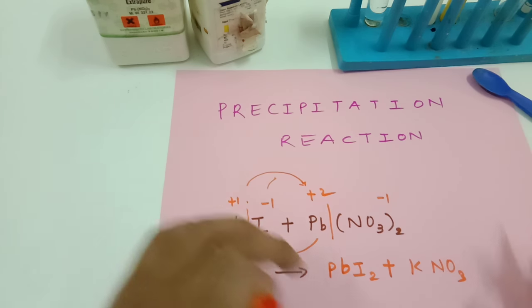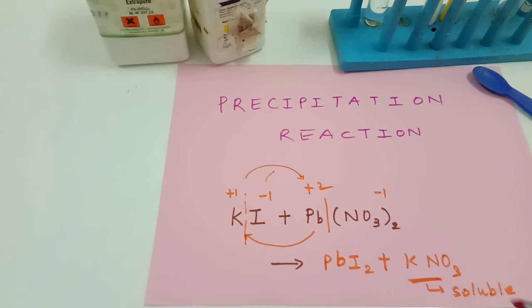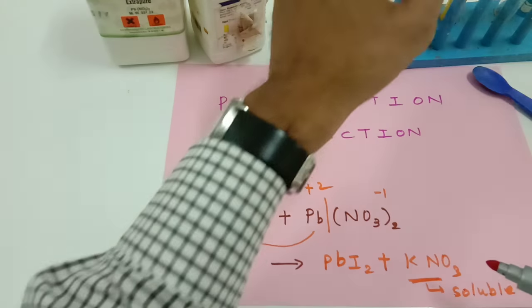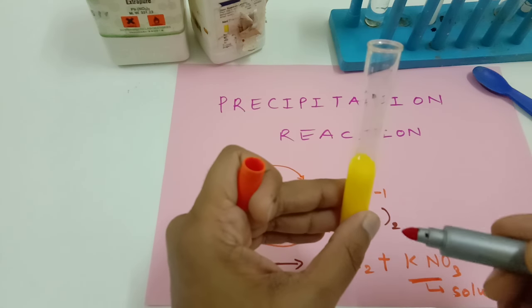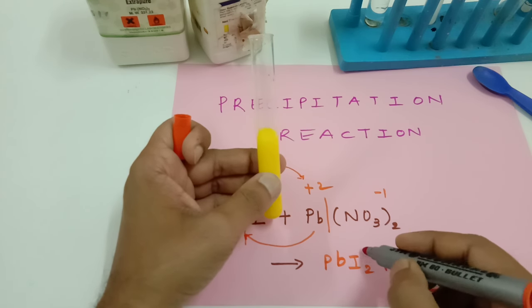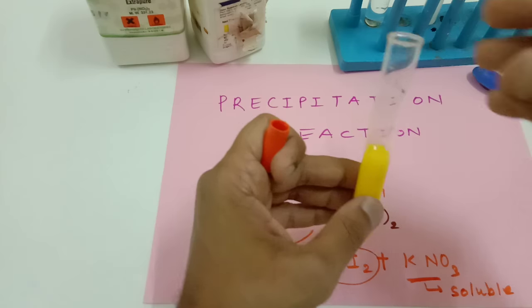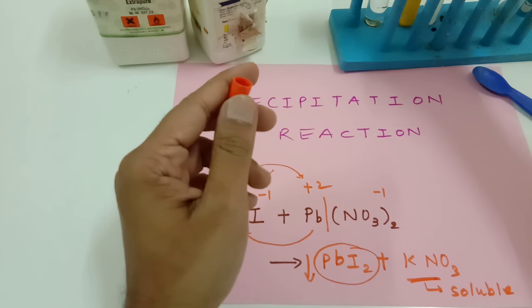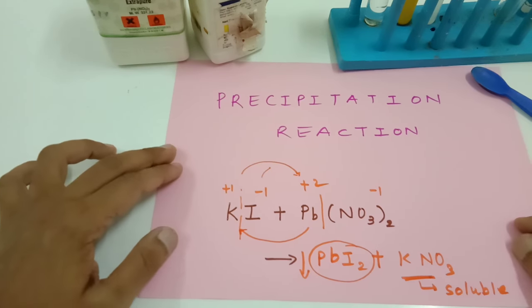Now we know that all compounds of potassium are soluble in water. So that means KNO3 dissolves in the water. So we have water in it and KNO3 is already dissolved. So that means the substance that does not dissolve in water forms a precipitate. So PbI2 precipitates which are yellow in color and I should let it settle down for at least an hour so that we may see the precipitates in a better way.